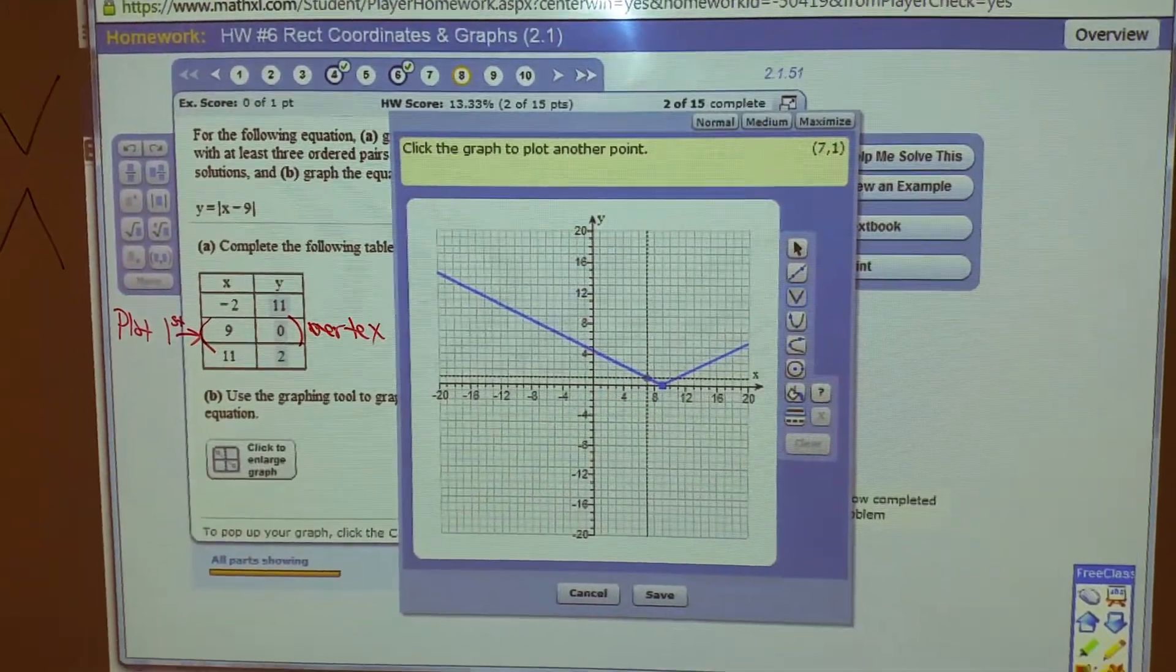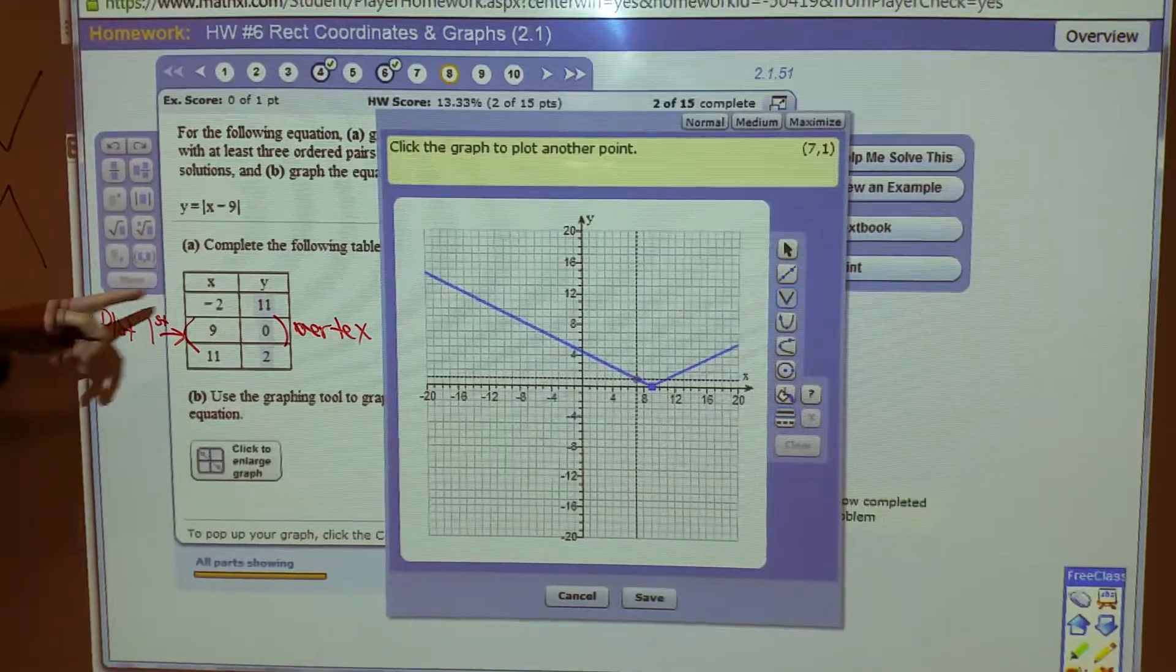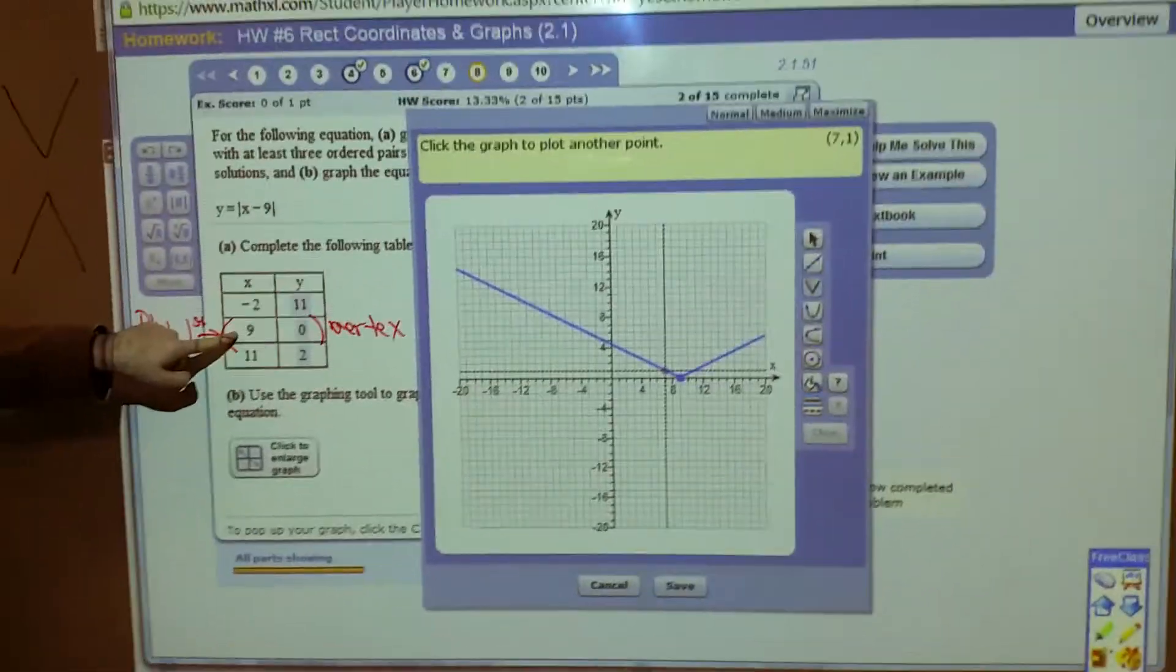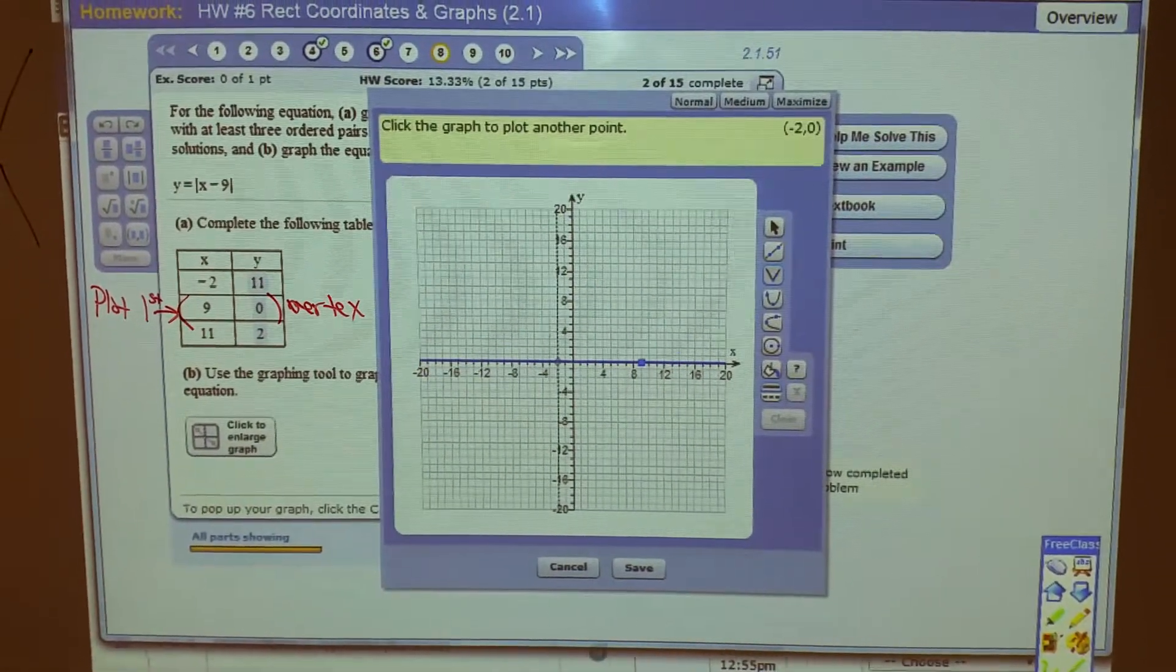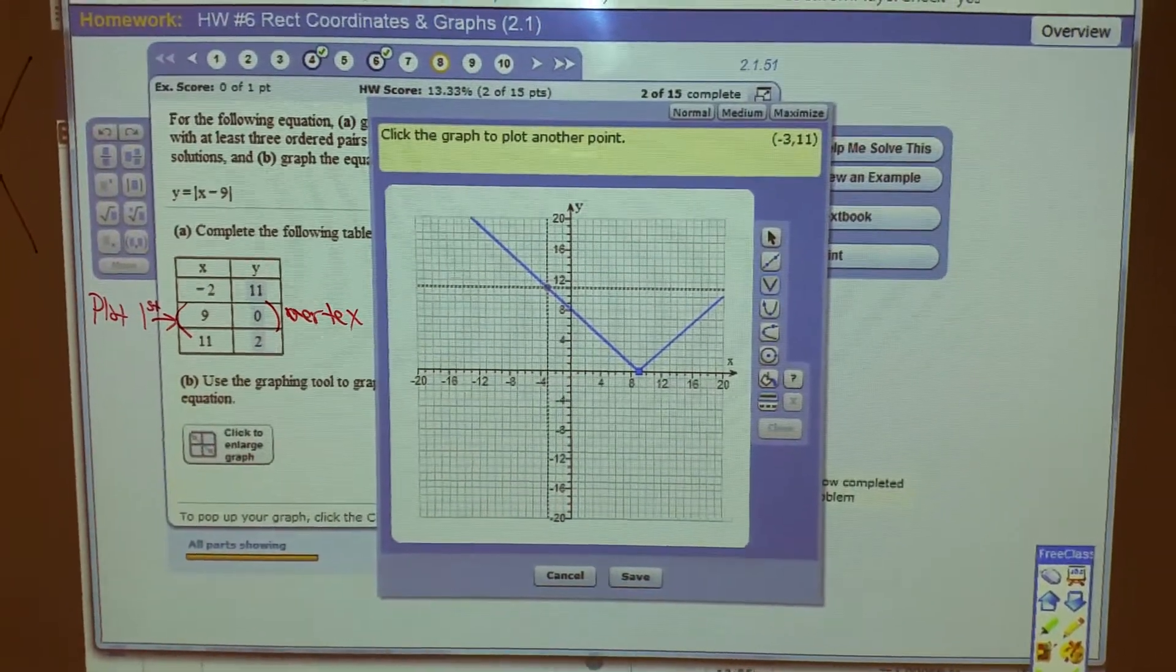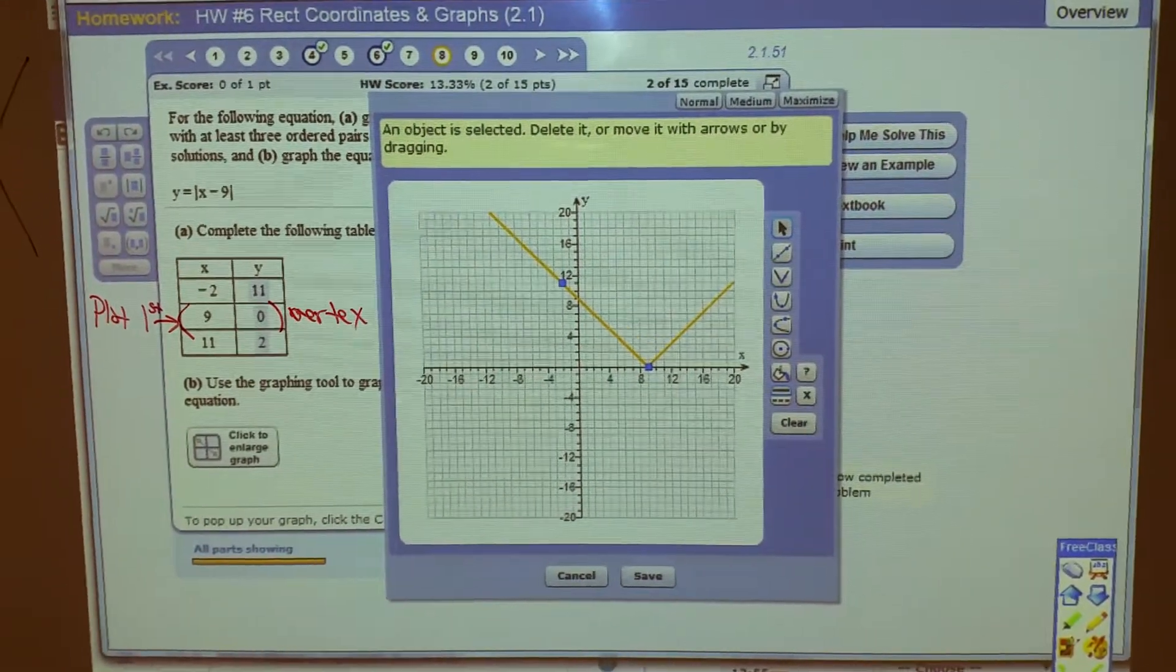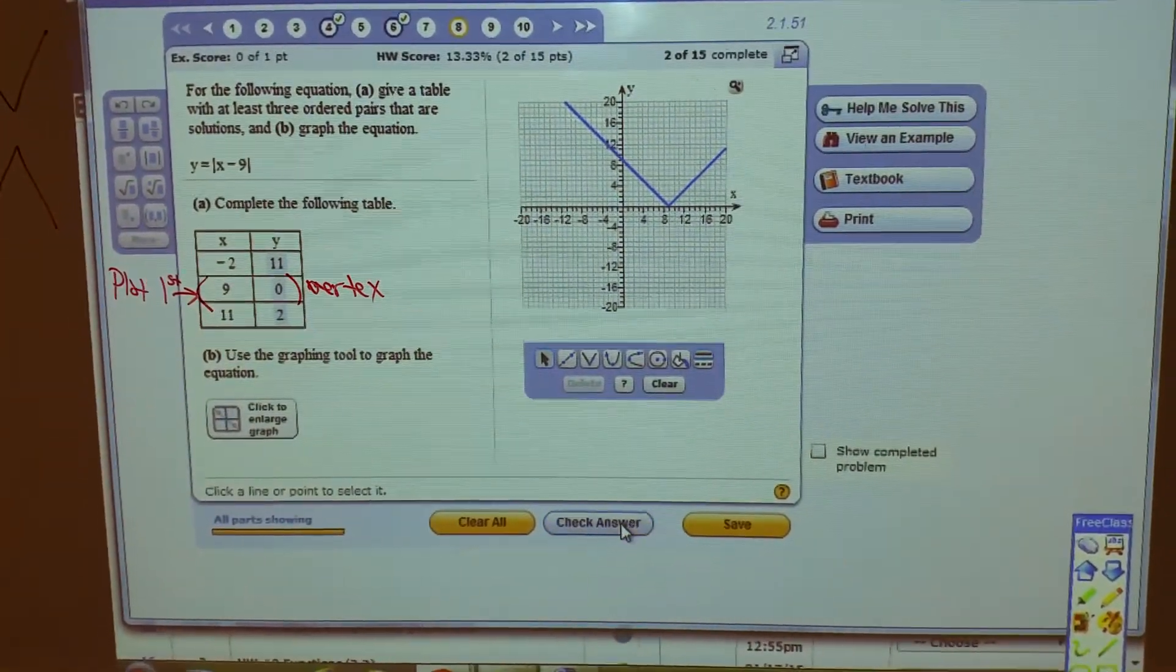We're going to plot that right nine up zero first. You don't just go in the order that we did when we were graphing the three-point quadratic. So right nine up zero. Now it says click the graph to plot another point. I'm going to plot one of these points, either negative two, eleven, or eleven, two. So on this tool it's different. You plot the middle point first and then plot one of the other points. Left two, up eleven. Am I at negative two, eleven? No, I'm at negative three. How do I know that? Look in the upper right corner of the yellow box. Negative two, up eleven. There. Now let's check it. And check it.